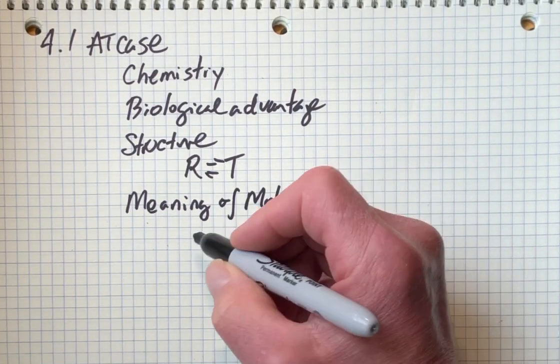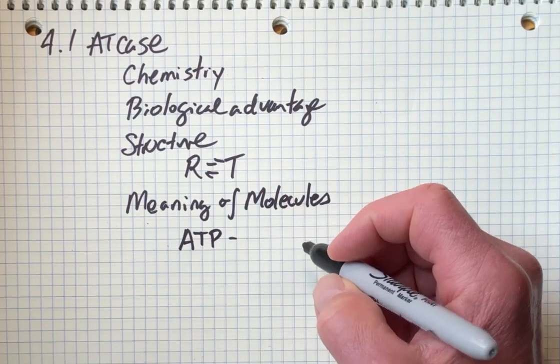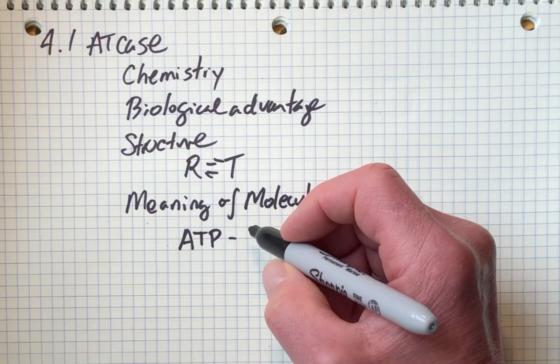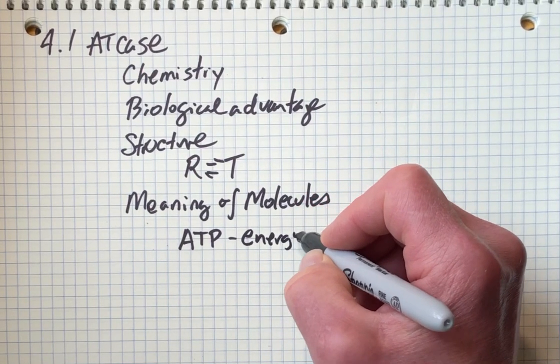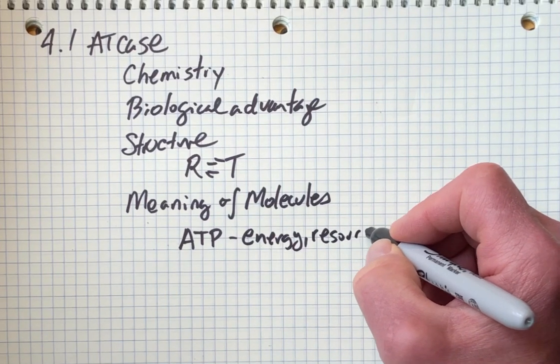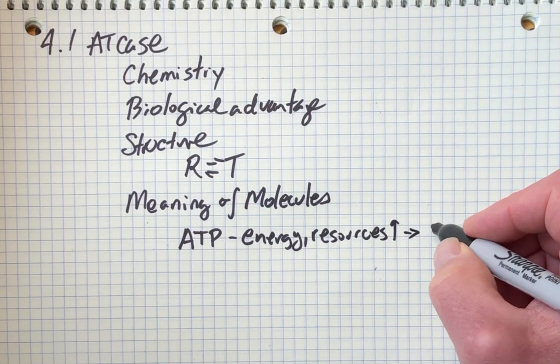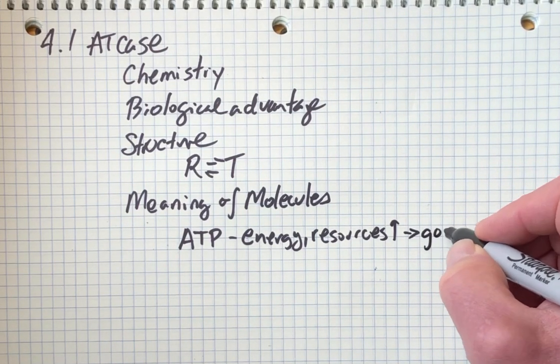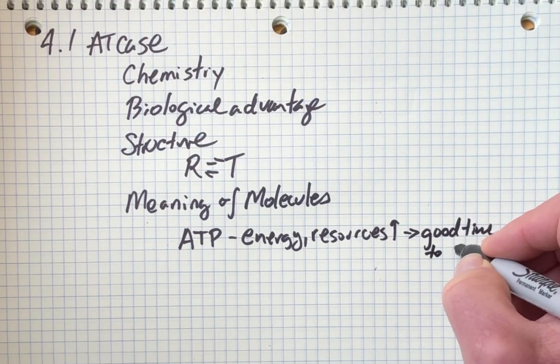We can begin with ATP. This tells the cell, if ATP levels are high, that there's a lot of energy and resources are abundant. That would inform the cell that this is a good time to make more cells, a good time to divide.